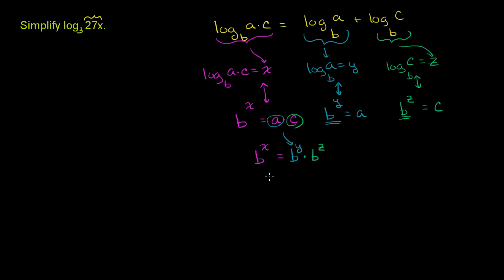And we know from our exponent properties that if we take b to the y times b to the z, this is the same thing as b to the y plus z power. This comes straight out of our exponent properties. And so if b to the y plus z power is the same thing as b to the x power, that tells us that x must be equal to y plus z.